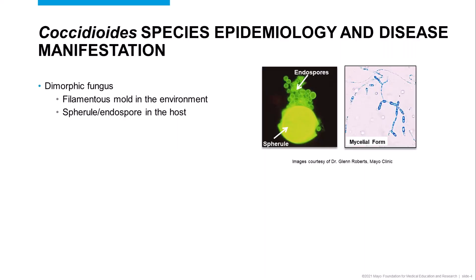As a reminder, there are two species of coccidioides — Coccidioides immitis and Coccidioides posadasii — that are most frequently associated with human infections. These are dimorphic fungi, meaning that they exist in the environment as filamentous molds, and inhalation of released arthroconidia can lead to infection in some hosts.